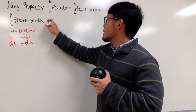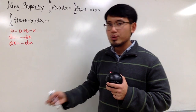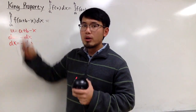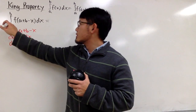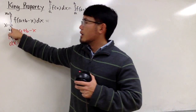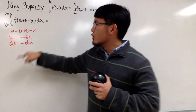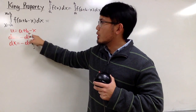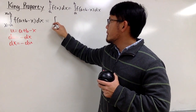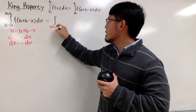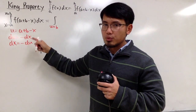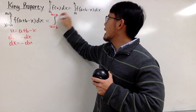Now we'll take this integral to the u world. Don't forget that the limits of integration are in terms of x, so we have to convert them too. When x is a, we get a plus b minus a, so u equals b — we begin at b. When x is b, we get a plus b minus b, so u equals a — we go up to a.